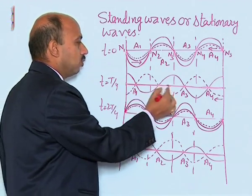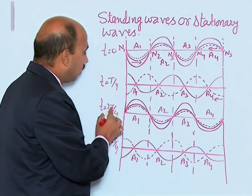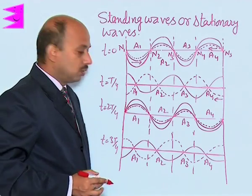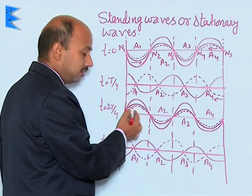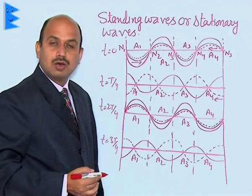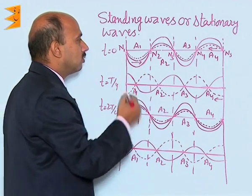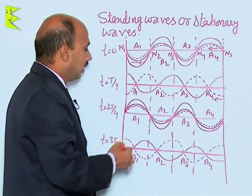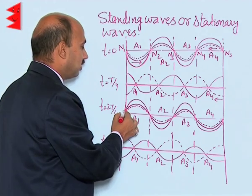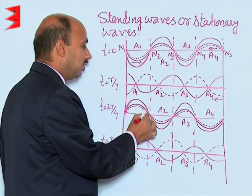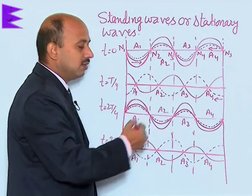At t = 2T/4, the distance traveled from left to right is λ/2. Again the superposition is similar to the first case but opposite in phase — the crest of one wave falls on the crest of the other. The net resultant displacement is again maximum, shown by the thick line.